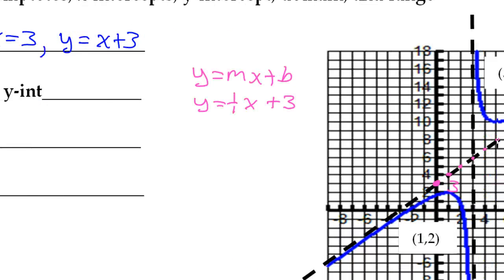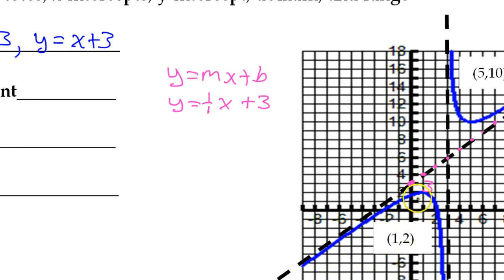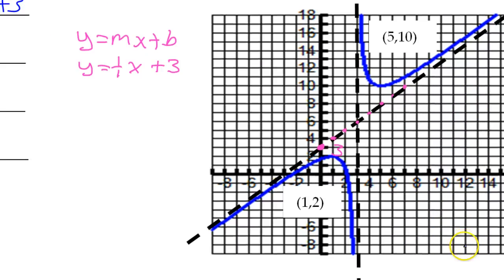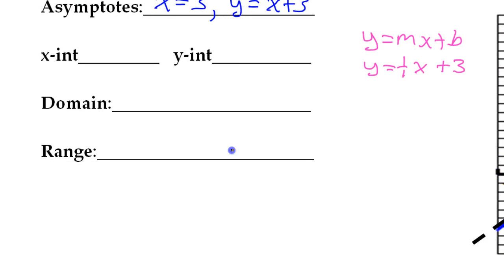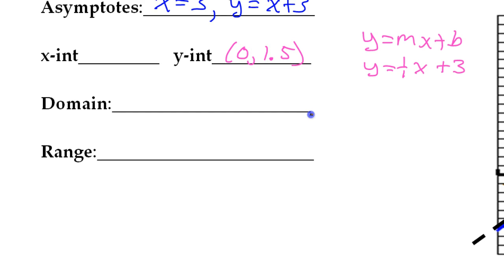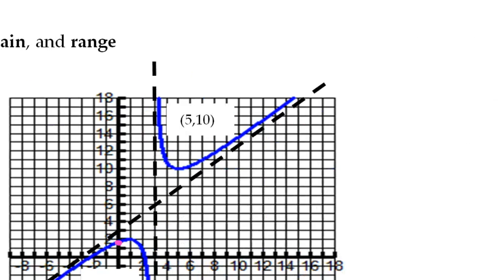Now for the y-intercept: the y-intercept is where the function crosses the y-axis. It seems to be somewhere between 1 and 2 — about 1.5 or so. Just estimate. So the y-intercept is (0, 1.5). Without a function, we are left to estimate as best we can.